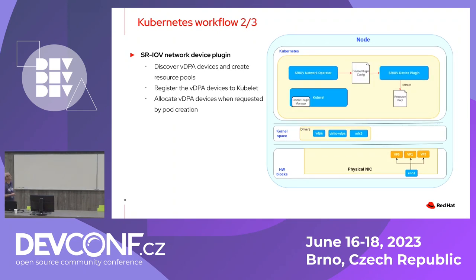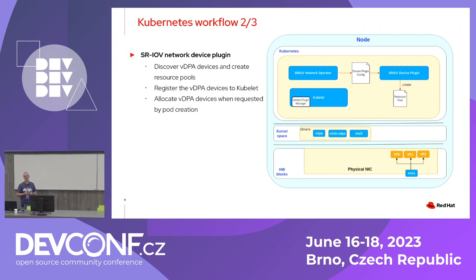The device plugin is responsible for discovering the VDPA devices and advertising them to Kubernetes. You can define resource pools — for instance, VFs zero to three as pool one and four to seven as pool two. When you create a pod, it must reference a resource pool so that the device plugin can allocate the VDPA device during pod creation.